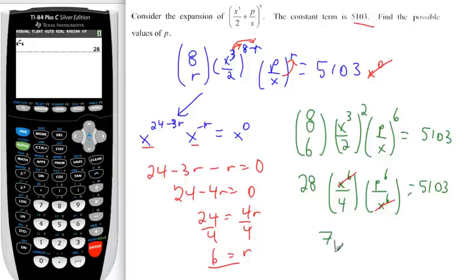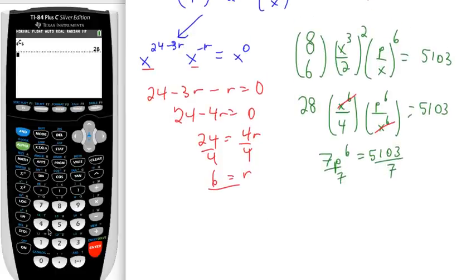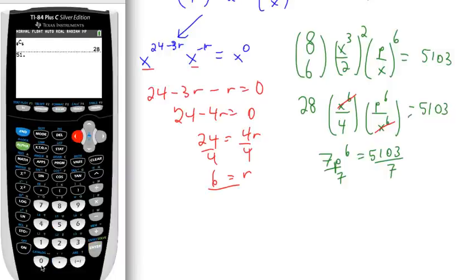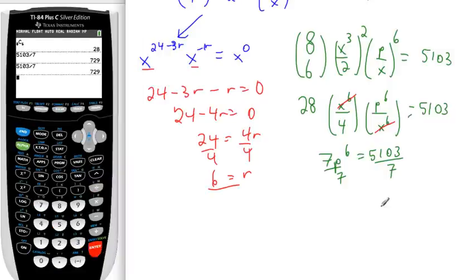So now you have 7 p to the 6 equals 5103. Basic equation to solve, divide both sides by 7. 5103 divided by 7 gives us 729.